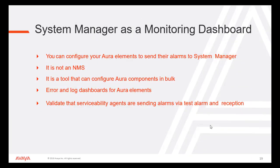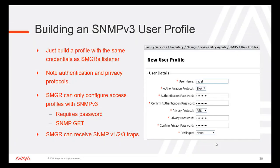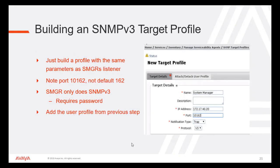System Manager as a monitoring dashboard: You can configure your Aura elements to send alarms to System Manager. Note that it is not an AMS — it is a tool that can configure Aura components in bulk. It provides error and log dashboards for Aura elements, and validates that Serviceability Agents are sending alarms via test alarm and reception. When building an SNMP version 3 user profile, build a profile with the same credentials as SMGR's listener, noting the authentication and privacy protocols. System Manager can only configure access profiles with version 3, requiring a password and SNMP get. When System Manager is configured as a target profile, note that the port used is 10162, not the default port 162.